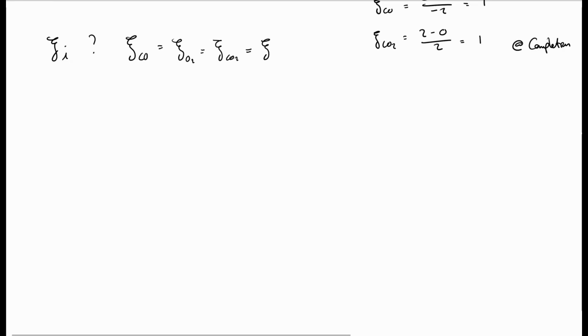There's also other things we could do with extent of reaction. If we take the equation for extent of reaction and rearrange it, we can calculate the moles of a species at any time based on the extent of reaction for the reaction multiplied by the stoichiometric coefficient of that species plus the initial moles of that species.